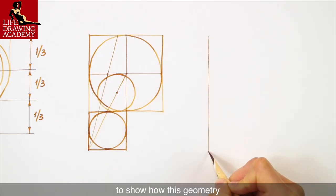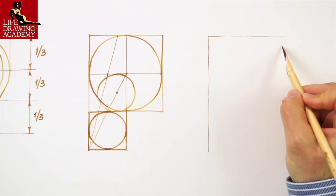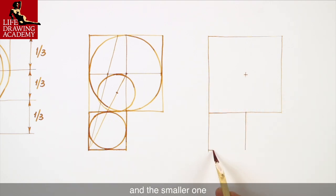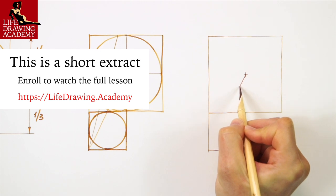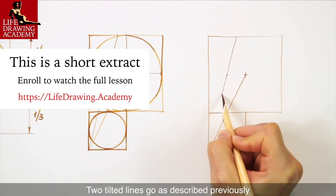I will make another sketch to show how this geometry describes the ear's outlines and contours. Once again, here's the big square with its center and the smaller one. Two tilted lines go as described previously.